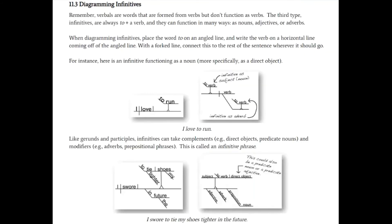Now it's time to look at infinitives — our third type of verbal. Remember, verbals are words formed from verbs but don't function as verbs any longer. Infinitives function in a number of ways: as nouns, adjectives, or adverbs, and they are diagrammed using a forked line. In the sample 'I love to run,' the infinitive 'to run' is the direct object — functioning as a noun. Like other verbals, infinitives can take on complements and modifiers. Let's look at: 'I swore to tie my shoes tighter in the future.'